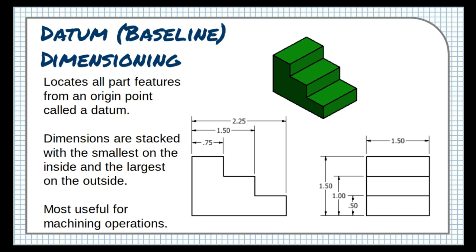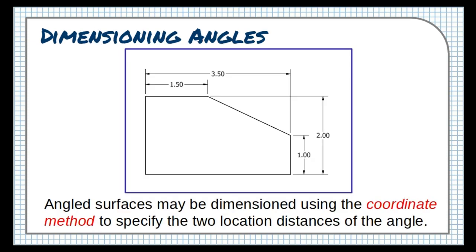This method of dimensioning is particularly useful in machining operations, where a machine tool is set to an initial home point, and then directed to different coordinates relative to that home point to cut or drill into the material.